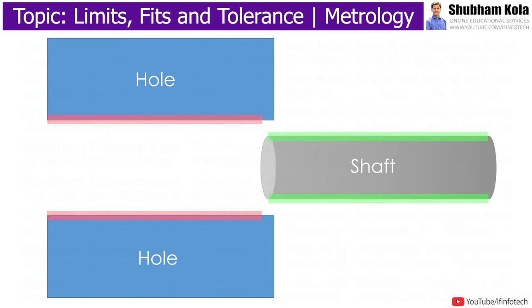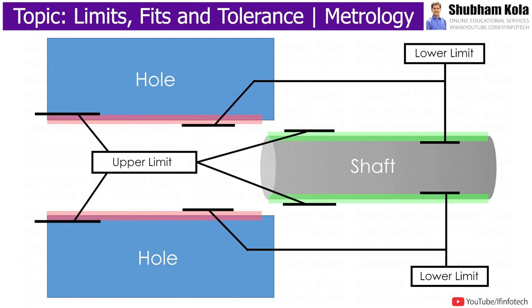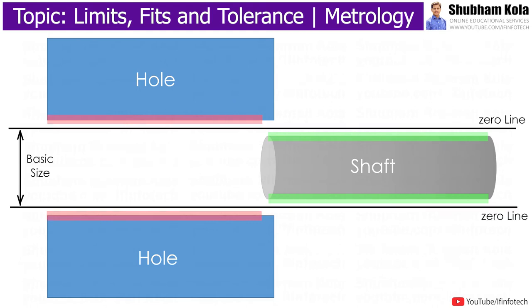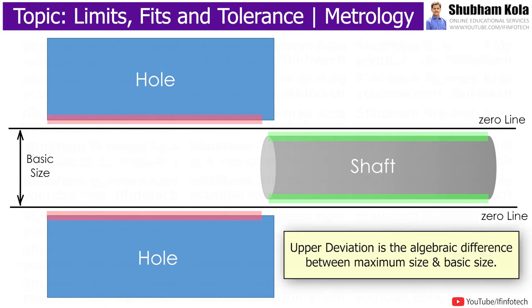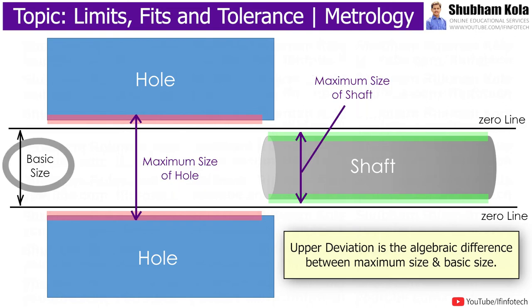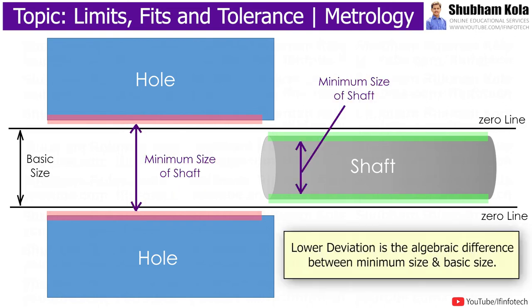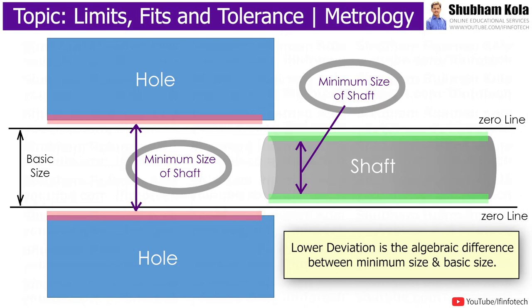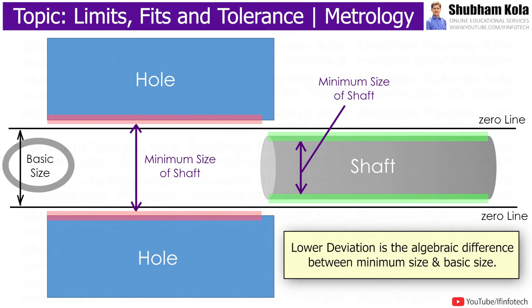Tolerance is the difference between the upper limit and lower limit of a dimension. Upper deviation is the algebraic difference between maximum size and basic size, whereas lower deviation is the algebraic difference between minimum size and basic size.